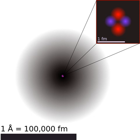Atoms are electrically neutral if they have an equal number of protons and electrons. Atoms that have either a deficit or a surplus of electrons are called ions. Electrons that are farthest from the nucleus may be transferred to other nearby atoms or shared between atoms. By this mechanism, atoms are able to bond into molecules and other types of chemical compounds like ionic and covalent network crystals.